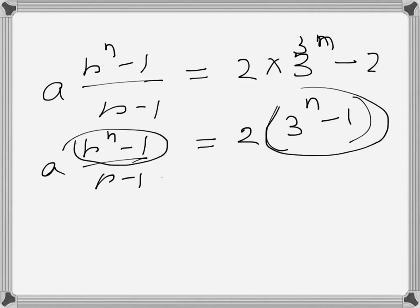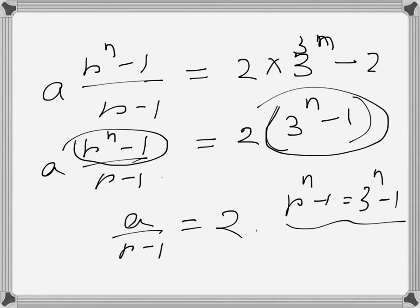So this is there, and r to the power n minus 1 is equal to 3 to the power n minus 1. So from here we can write r is equal to 3.